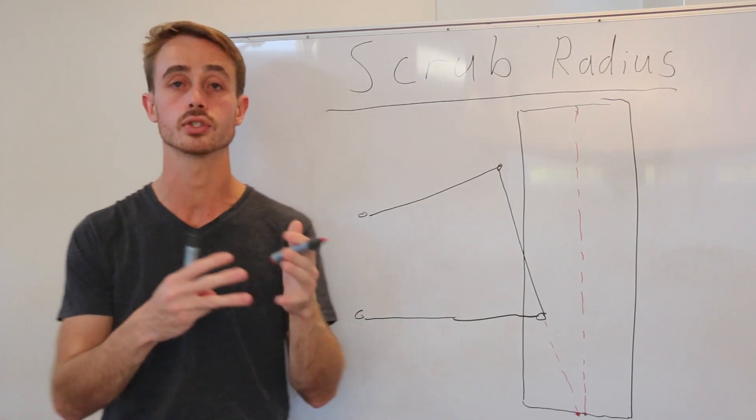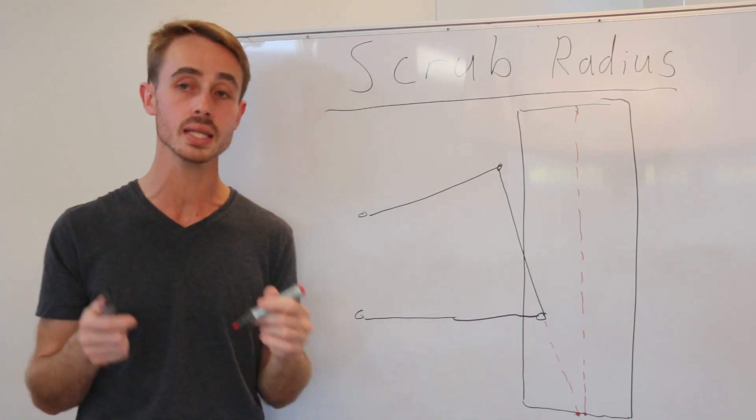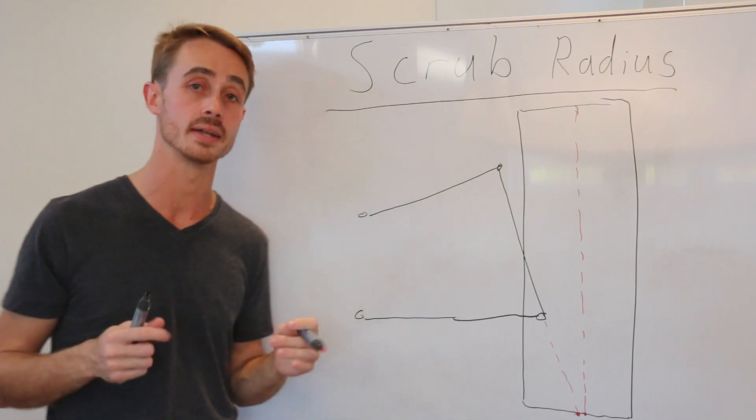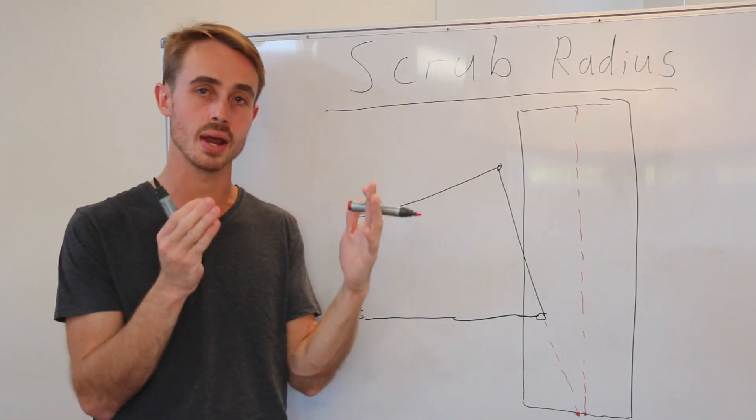So as a result, the tyre scrubs around it. You can see this really, really severely demonstrated in things like go-karts which have enormous scrub radii.